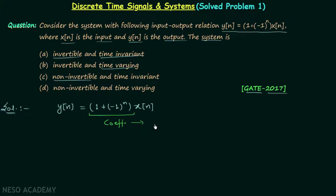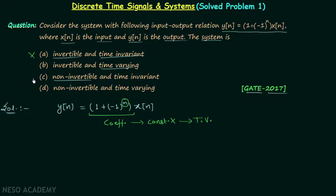The coefficient in the system relationship is not constant, because it contains n, the independent variable. Therefore the coefficient is a function of n, making it variable and not constant. We know that whenever the coefficient in the system relationship is not constant, the system is time variant. Therefore options A and C are not correct.